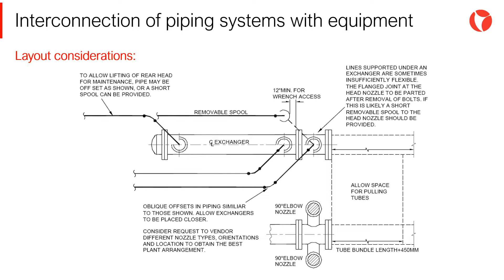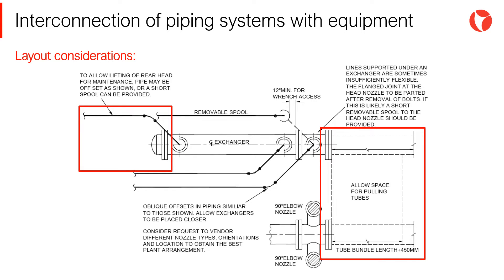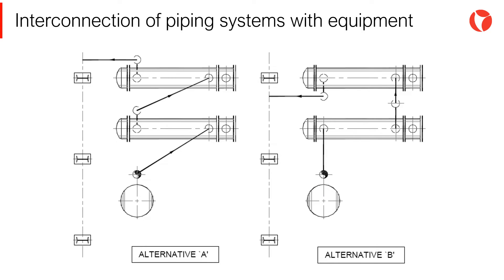It is critical and essential that the space in front of the exchanger is free to facilitate extraction of the tube bundle. Likewise, the pipes reaching the rear of the equipment must leave free space for the rear head to be hoisted. As shown on the screen, there is no single acceptable configuration for the interconnection of this type of equipment. The designer must follow the operation and maintenance requirements and at the same time come up with the most economical designs possible.